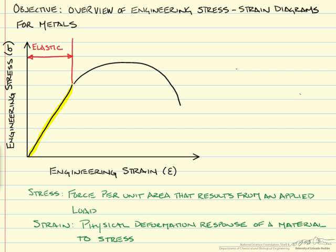The slope of the line in the elastic region is the modulus of elasticity, also known as the material stiffness. As we increase the load being applied to the test specimen, we will reach a point where there is no longer linear behavior. This is our proportional limit.